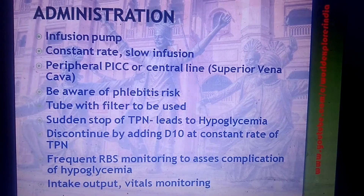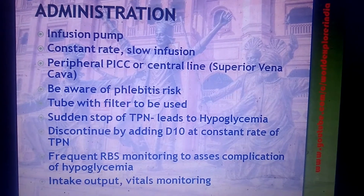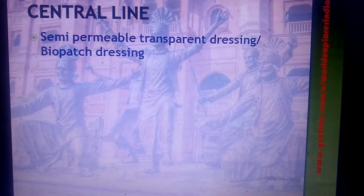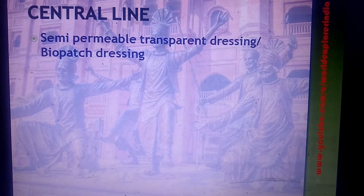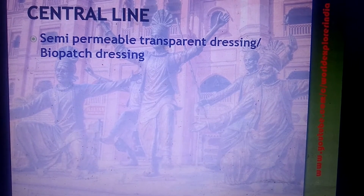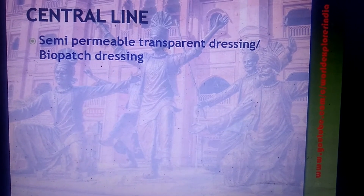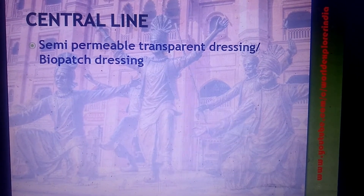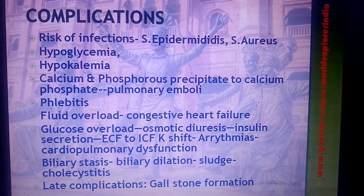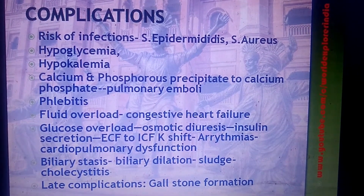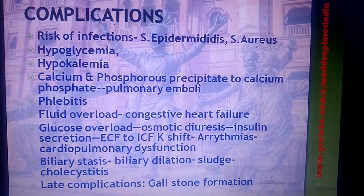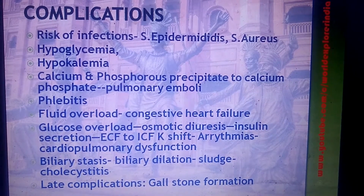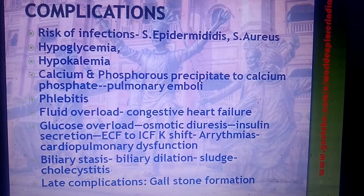For complications, frequent RBS monitoring is needed to assess hypoglycemia. Intake-output monitoring and vital signs monitoring are essential. For central lines, a semi-permeable transparent or bio-occlusive dressing should be used so we can detect contamination and prevent central line-associated infections. Common infective complications include Staphylococcus epidermidis and Staphylococcus aureus. Other complications include hypoglycemia and hypokalemia.